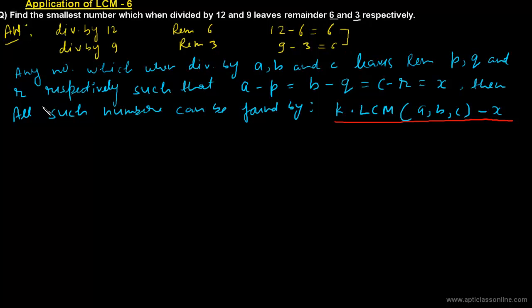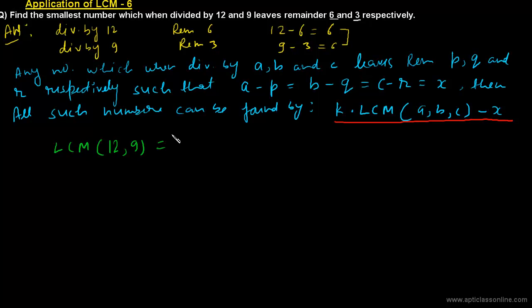Let's apply this formula to find the answer. The number is divided by 12 with remainder 6, and by 9 with remainder 3. First, we find the LCM of 12 and 9, which is 36.